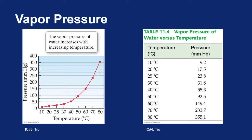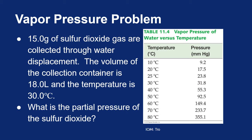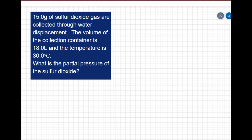So we can combine this with our knowledge of Dalton's law of partial pressure when we take on something like this. I know that I have 15 grams of sulfur dioxide gas and I've collected that through water displacement. I know the volume inside the collection container is 18 liters and the temperature is 30 degrees Celsius. I want to know what the partial pressure of the sulfur dioxide is. Now I see that the gas is being collected by water displacement. So whenever we see those words, we have to be careful.